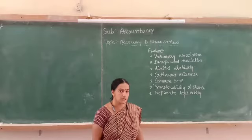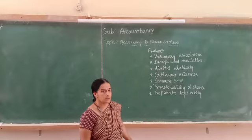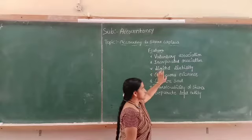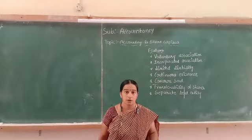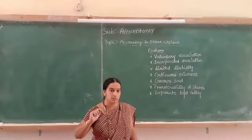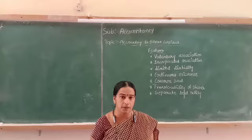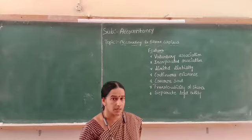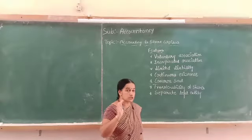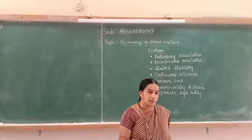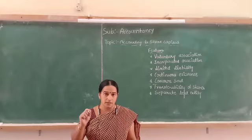If the company is not registered under the Companies Act, it will not be called a joint stock company. Next, the liability of the members is limited. In the case of partnership firm or sole proprietorship, the member's liability is unlimited. But in the case of a joint stock company, the liability of each member is limited — to the extent of unpaid amount of share capital or to the extent of the guaranteed amount.